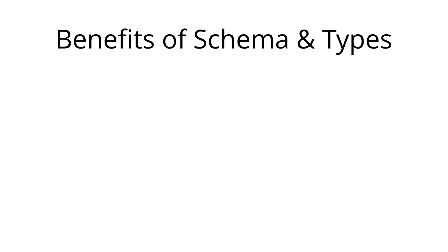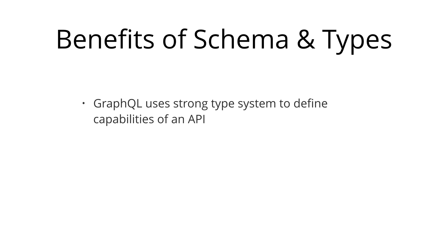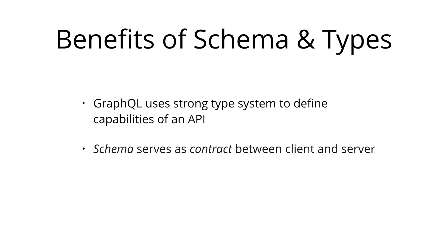Another major benefit of GraphQL is its type system. GraphQL uses a strong type system to define the capabilities of an API. All the types exposed in an API are written down in a schema using the GraphQL schema definition language. This schema also serves as the contract between the client and the server to define how a client can access the data.